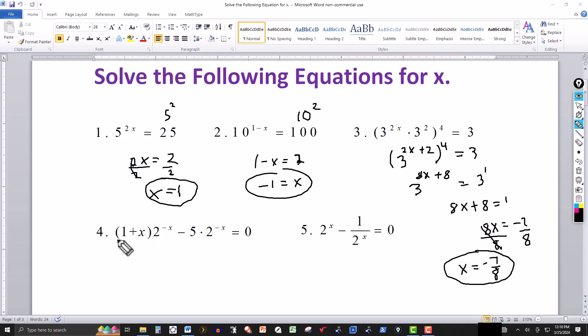Now in number 4, I got 1 plus x multiplied by 2 to the minus x minus 5 times 2 to the minus x equal to 0. Well, we can divide through by 2 to the minus x. That's not 0. As long as you're not dividing by 0, you can do that. So divide through by 2 to the minus x.